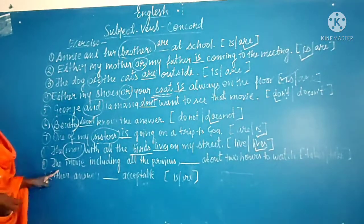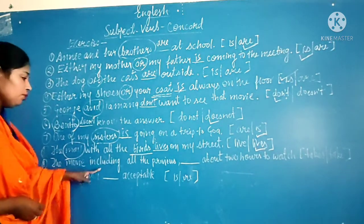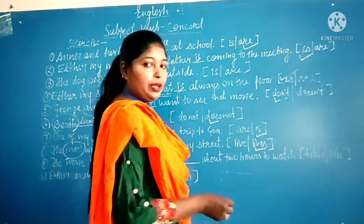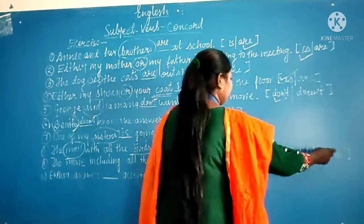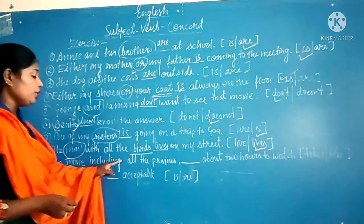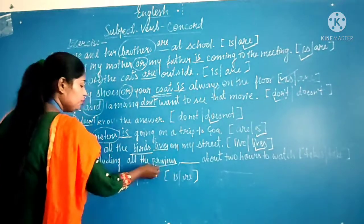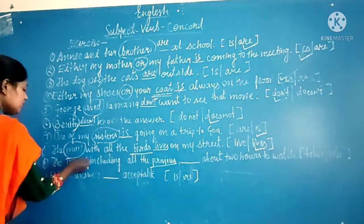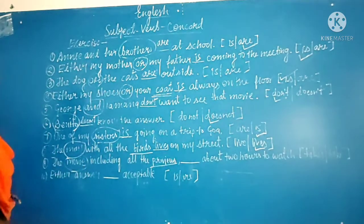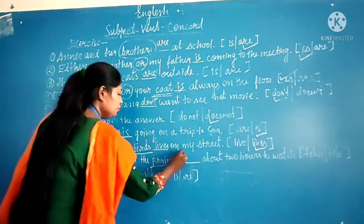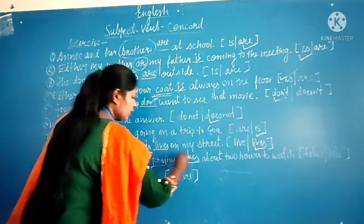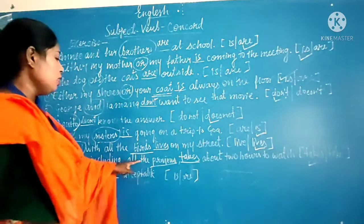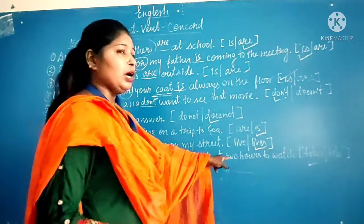Next: 'The movie, including all the reviews, ___ about two hours to watch.' The options are 'takes' and 'take.' Although 'reviews' is plural, we go according to the subject, which is 'the movie' — singular. So 'takes' is the correct answer. The movie, including all the reviews, takes about two hours to watch.